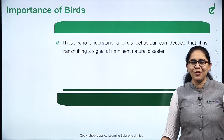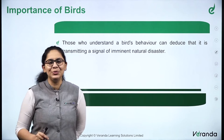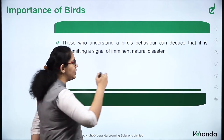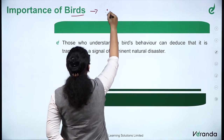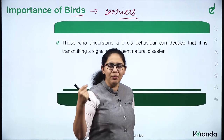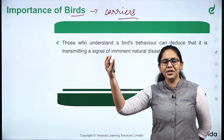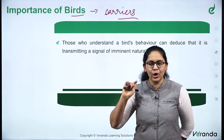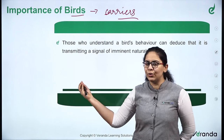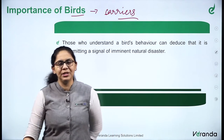What is the importance of birds? Why are birds relevant? Those who understand a bird's behavior can deduce that it is transmitting a signal of imminent natural disaster. First and foremost, birds are carriers — carriers of seeds and pollen material. Birds are one of the links for flowers and plant seeds to be carried from one place to another. A bird's behavior can also tell us a number of important things.